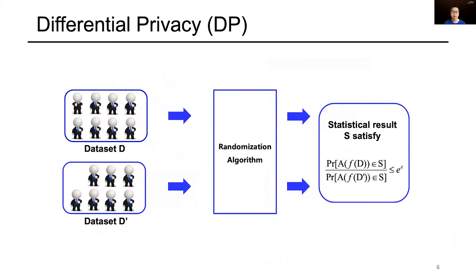To protect the user's data privacy, differential privacy has been the golden standard in both academia and industry. The general idea of DP is to guarantee that a single sample has limited impact on the output of an algorithm. Formally, given two neighboring datasets differing on one sample, after adding perturbation, their probability of outputting the same value is bounded by a value epsilon.